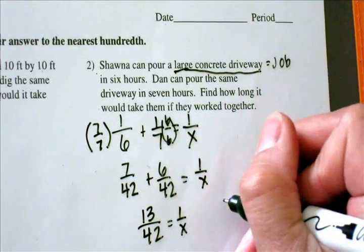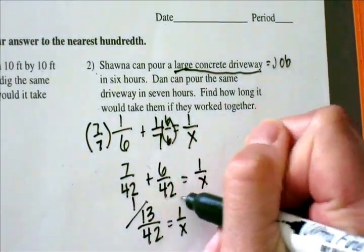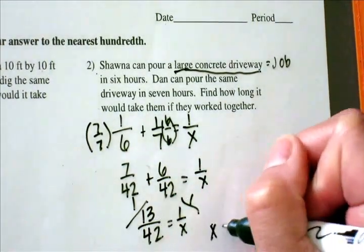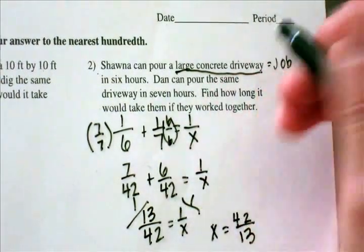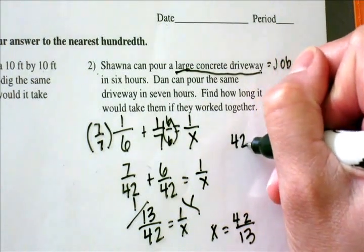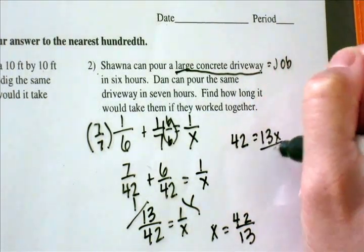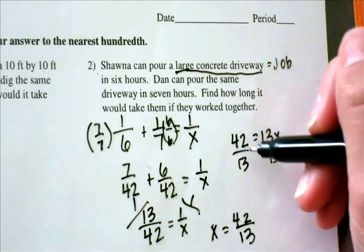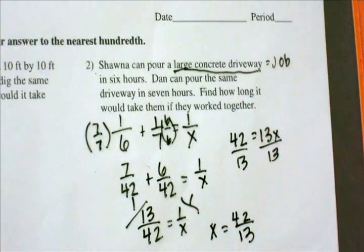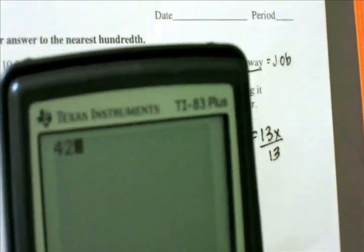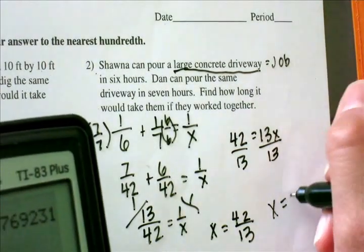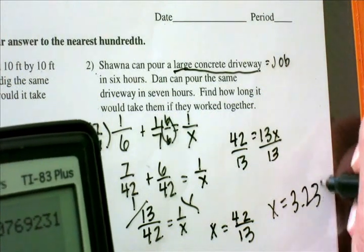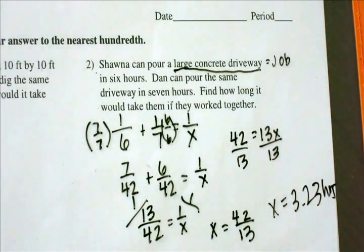I'm going to cross multiply. I could also take the inverse and flip to get the reciprocal. Either way, x equals 42 over 13. Cross multiplying gives 42 equals 13x, divided by 13, you still get 42 divided by 13. That equals 3.230, so rounding to the nearest hundredth, the answer is 3.23 hours. Comparing that to the answer sheet, that is your answer.